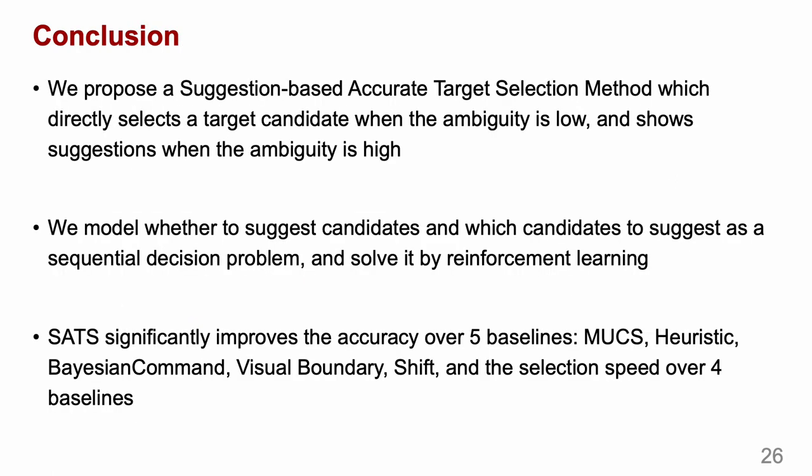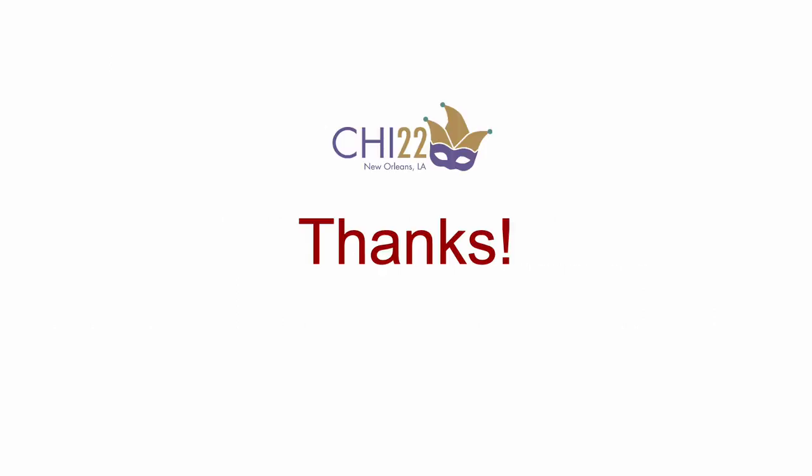To conclude, in this paper, we propose a reinforcement learning-based accurate target selection method, SETS. It can automatically decide to directly select a target candidate or show suggestions depending on the uncertainty of the touch input. Our user studies show that SETS outperforms 5 baselines in selection accuracy and 4 baselines in selection speed. Thanks for listening.